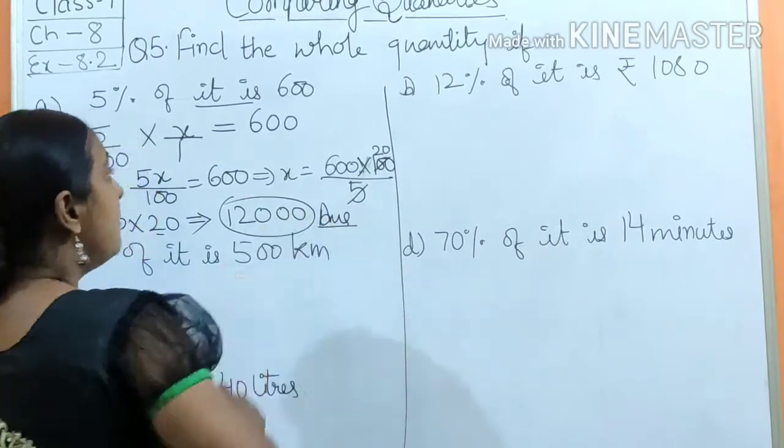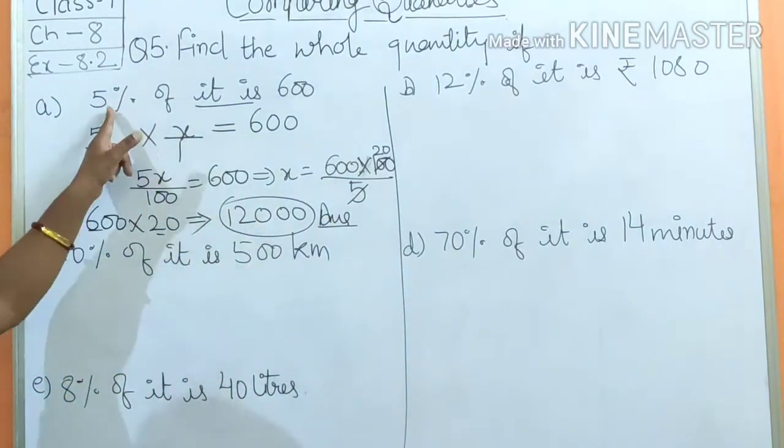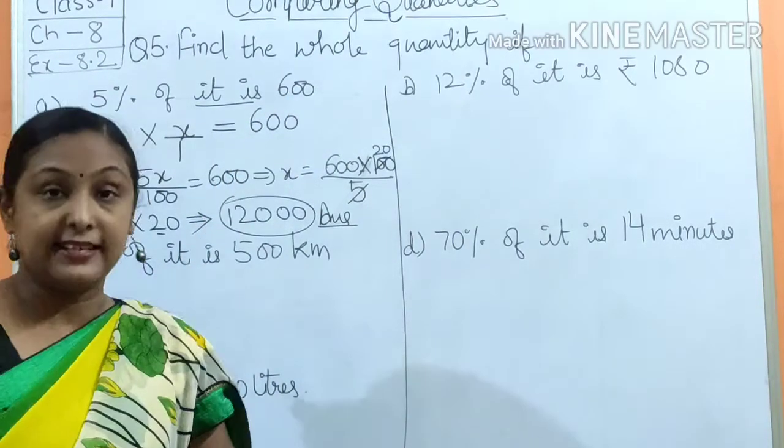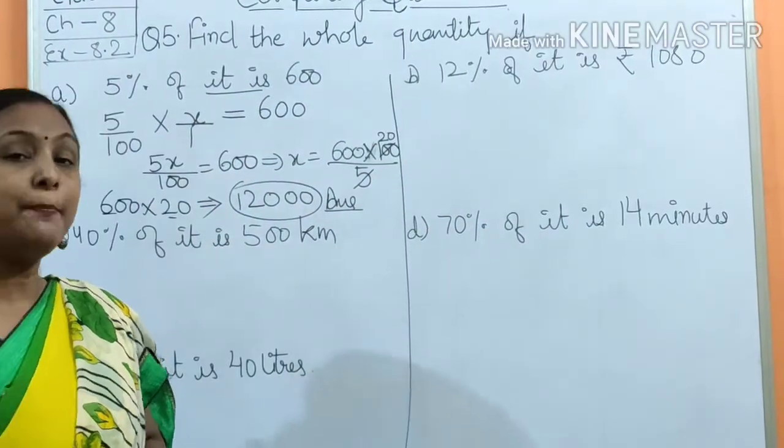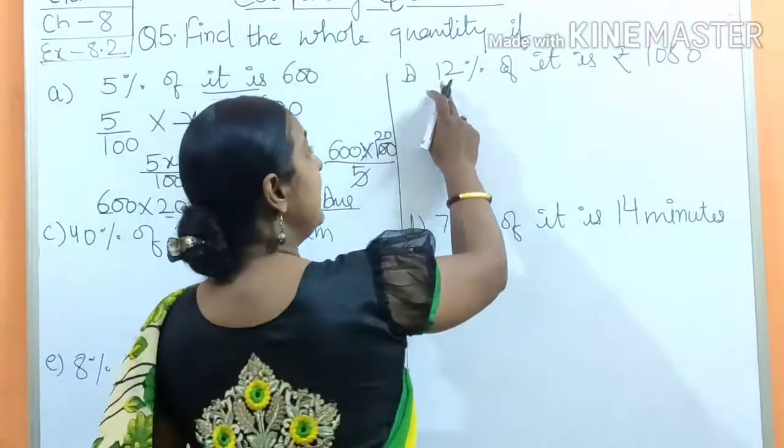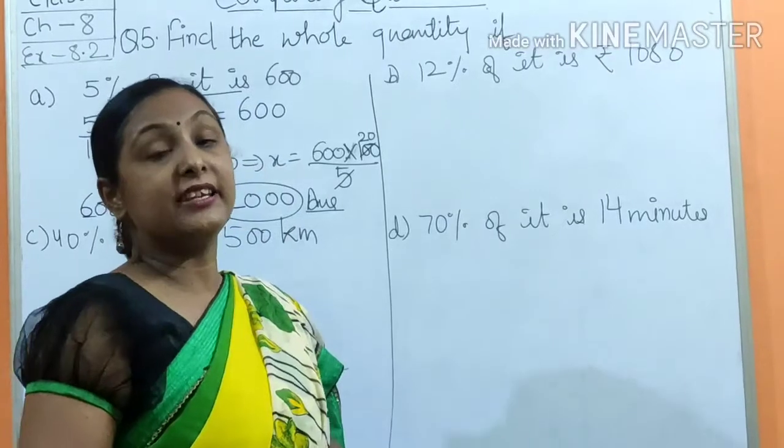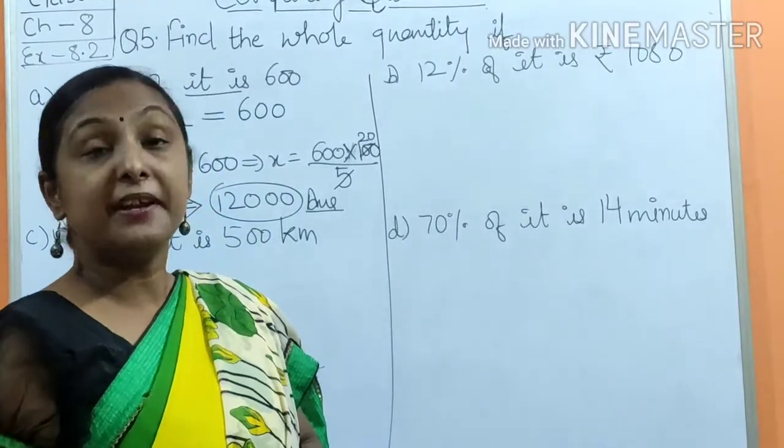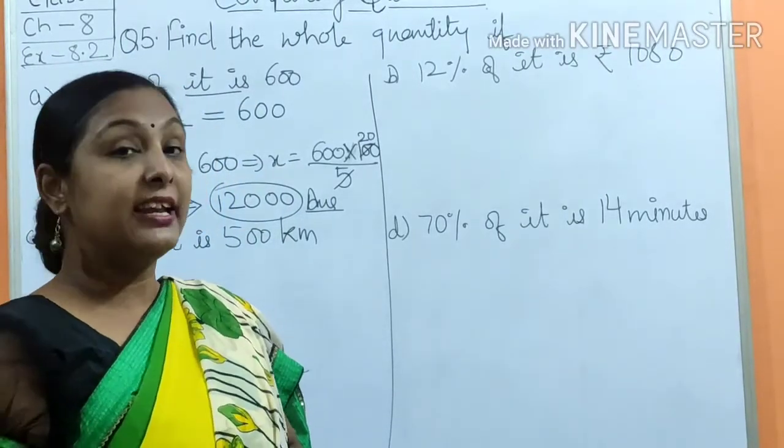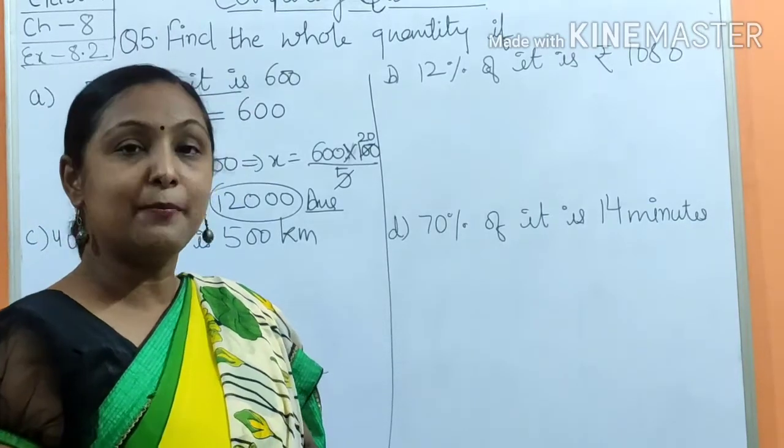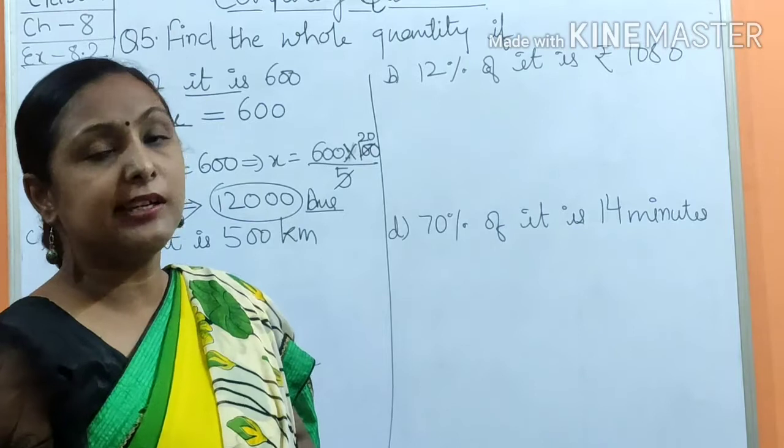This is our answer. It means if you get 12,000 to 5% then your answer will be 600. Okay, let's go to part b. What is part b? 12% of it is rupees 1080.